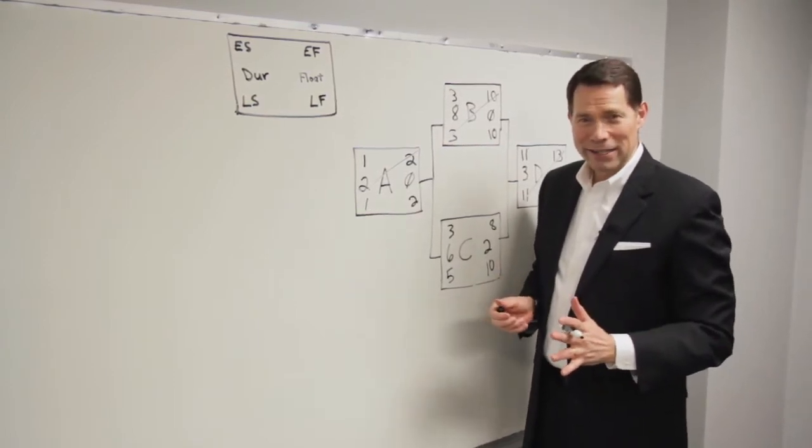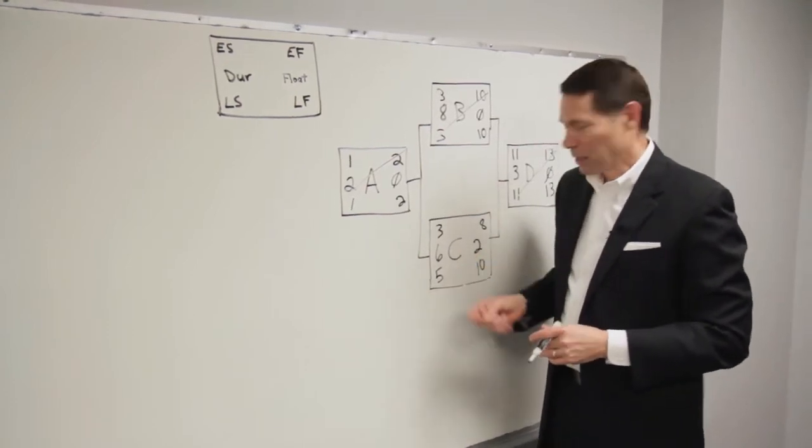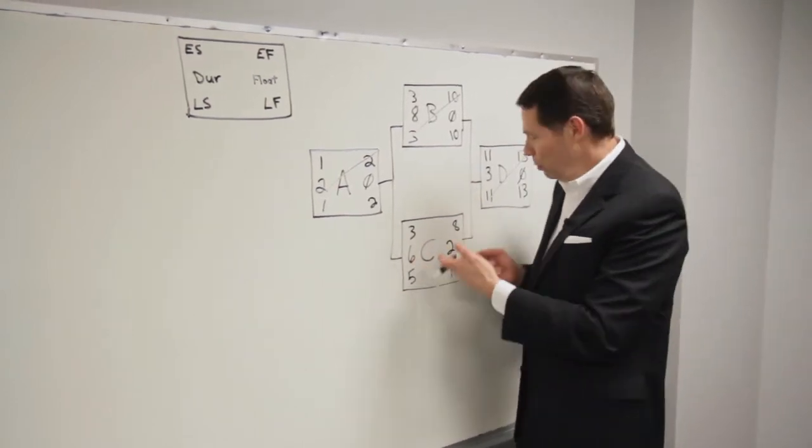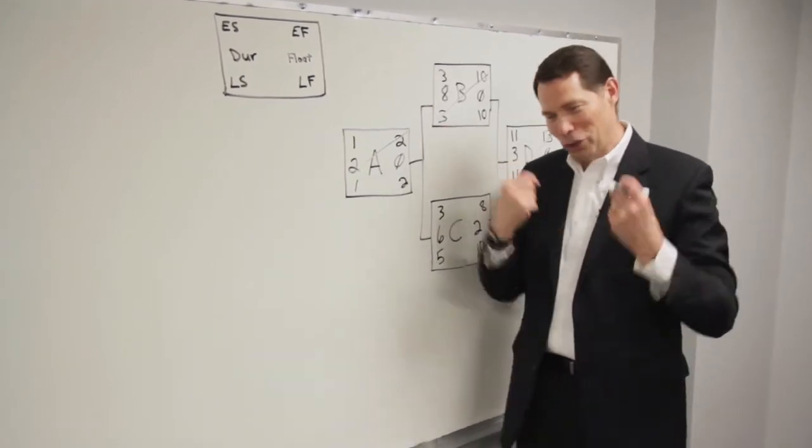Let's get a little bit more practical on this. Let's go through a practical scenario. Let's say activity C here. It's allocated to six days. We have two days of float. You assign that task to me.